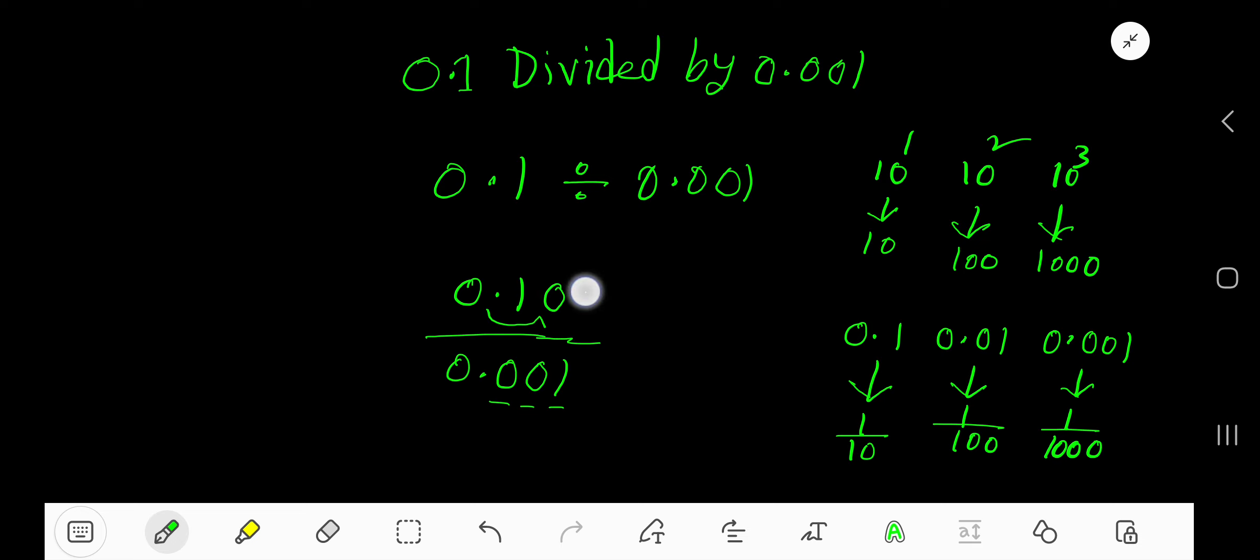...the numerator 3 places. 1, 2, 3 - the decimal will come here. That is 1 and 0, 0. So 100 is the answer. 100 is your answer.